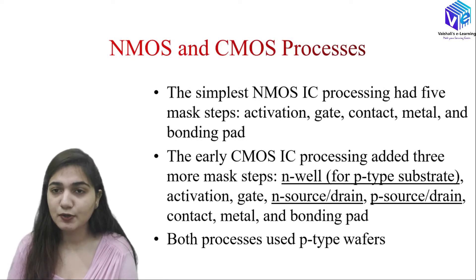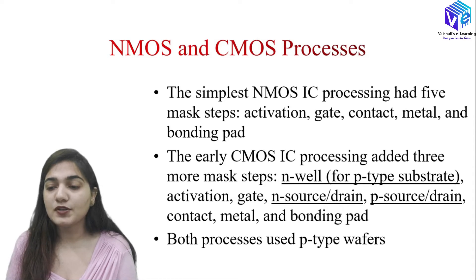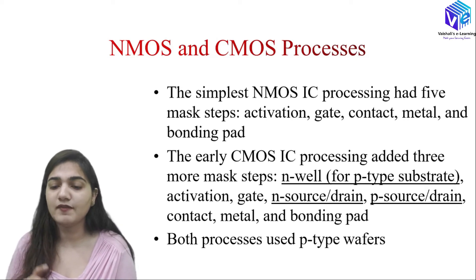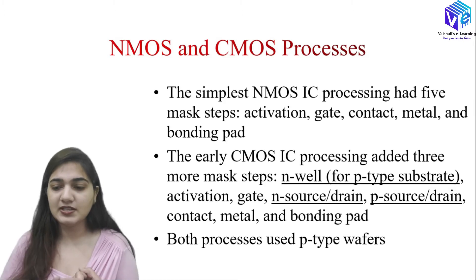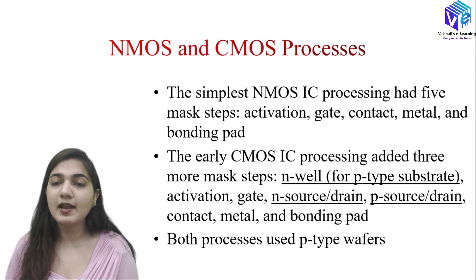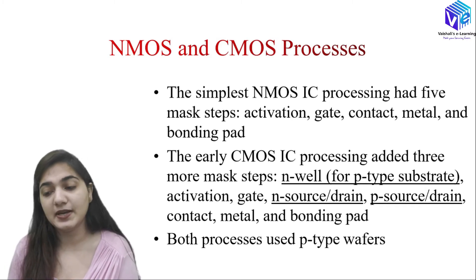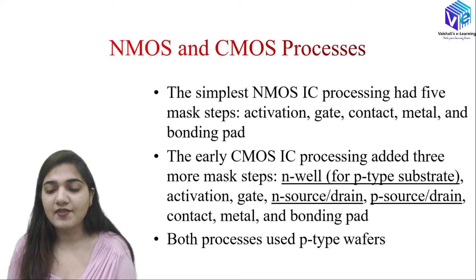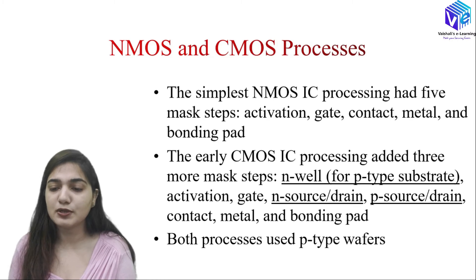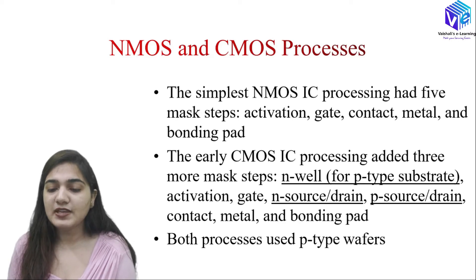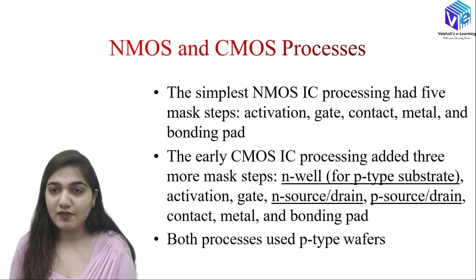CMOS developed from the NMOS process for historical reasons, and more fabrications were using P-type wafers. The simplest NMOS IC processing had five mask steps: active region, gate, contact, metal, and bonding pad. When moving to CMOS, three more steps are added — specifically the N-well formation for the P-type substrate, plus N source/drain, P source/drain, contact metal, and bonding pad.